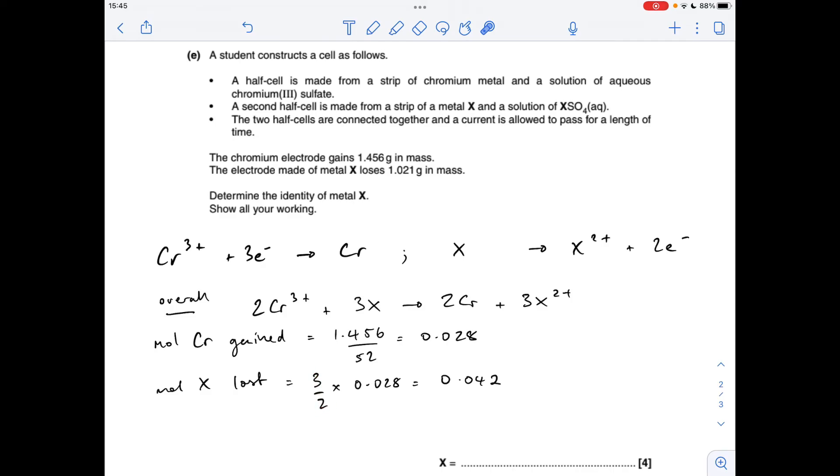So that's going to be three over two times the moles of chromium, so 0.042 moles of X has been lost.